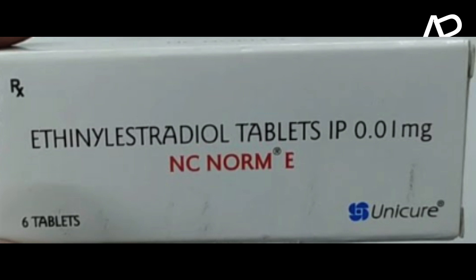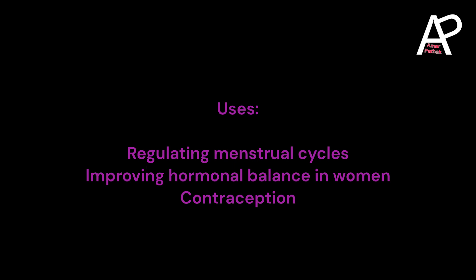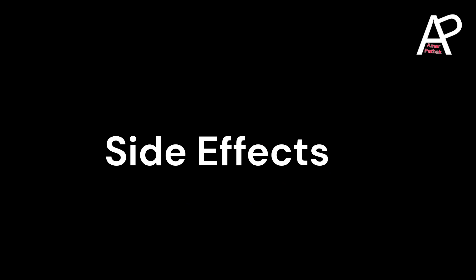NC-Norm E-Tablet contains Ethinyl Estradiol 0.01 mg. Its uses include regulating menstrual cycles, improving hormonal balance in women, and contraception. Side effects include nausea.